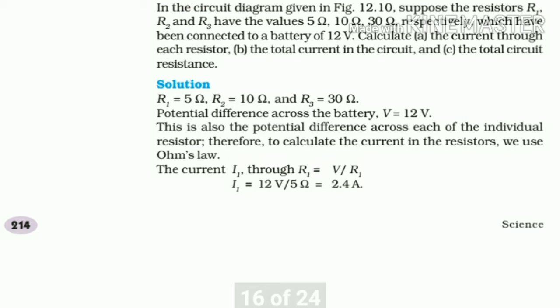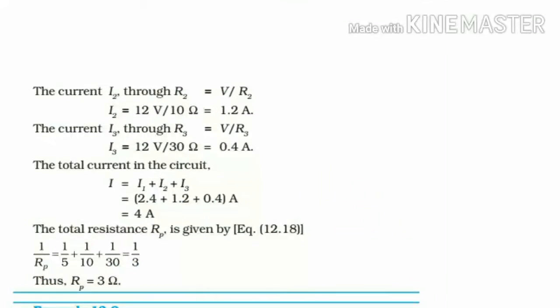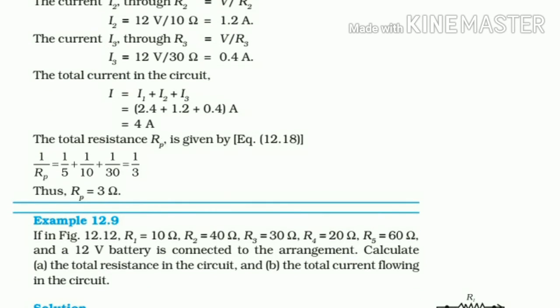For the currents, we have 12 by 5 equals 2.4 ampere, 12 by 10 equals 1.2 ampere, 12 by 30 equals 0.4 ampere. Total resistance is 1 by 5 plus 1 by 10 plus 1 by 30 equals 1 by 3.